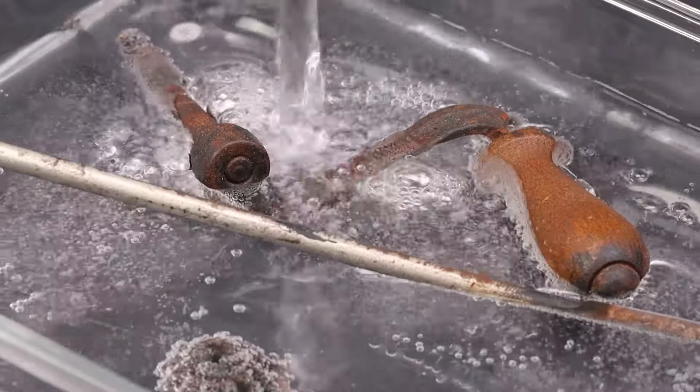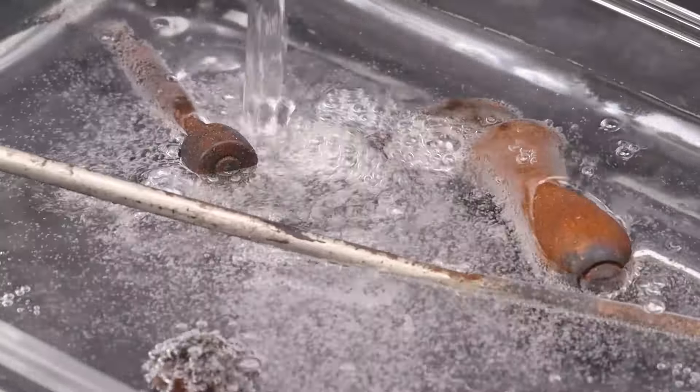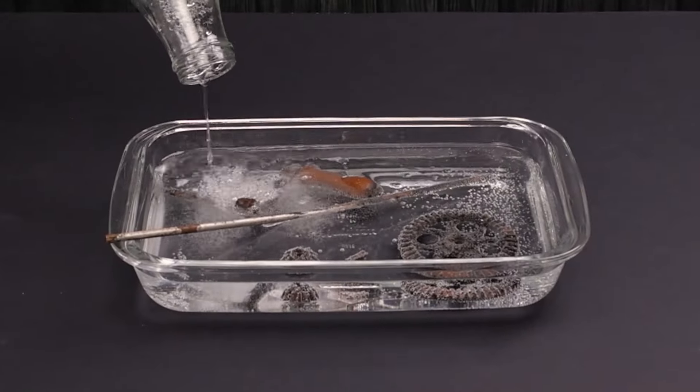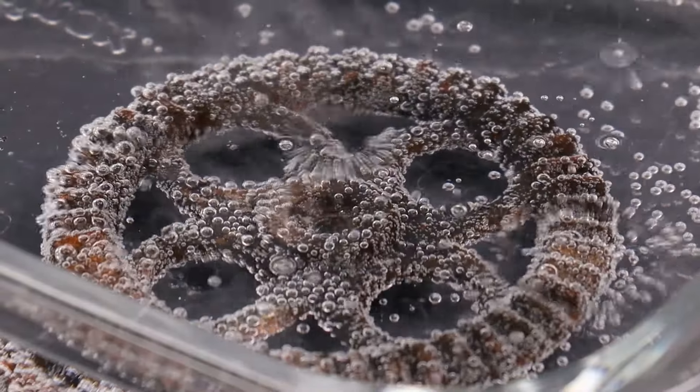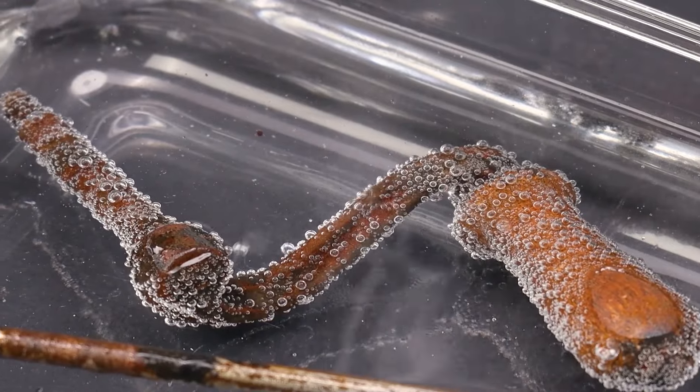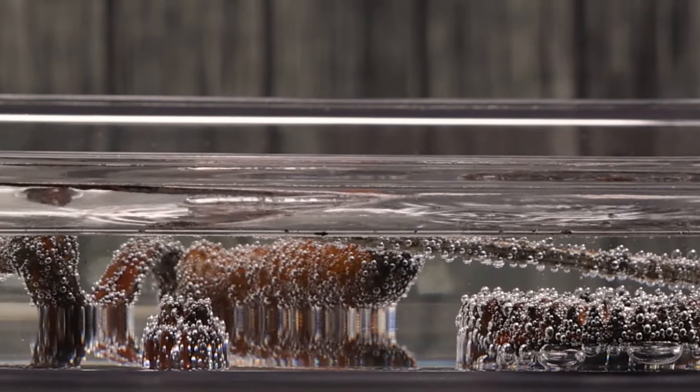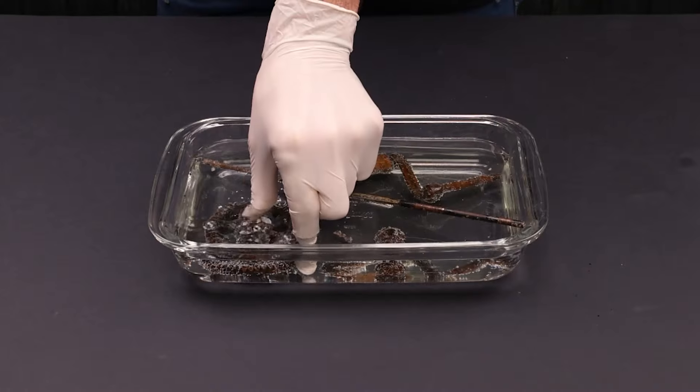My next step is to soak these rusty details of the object in white vinegar. The rust is putting quite a fight but white vinegar just won't give up. I'm also ready to assist it with my precious tools.